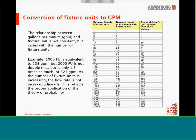For example, if the maximum probable demand for two branches is required, and one branch has a load of 1,000 fixture units and the other has 2,000 fixture units, it would be improper to add 208 GPM plus 321 GPM to obtain 529 GPM. The correct procedure is to add 1,000 and 2,000 fixture units to obtain a total of 3,000 fixture units, and then from the table determine the correct peak load demand as 432 GPM. This value reflects the proper application of the theory of probability.